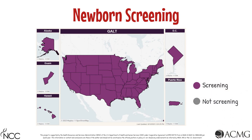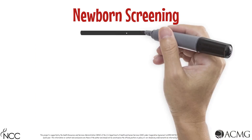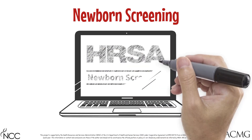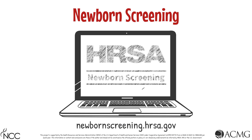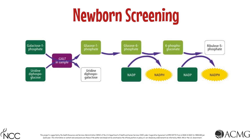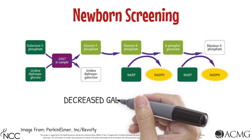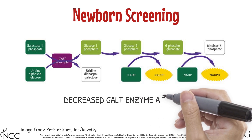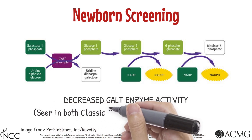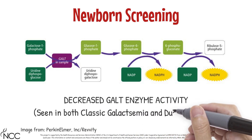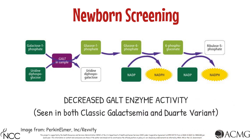All states in the United States provide newborn screening for Classic Galactosemia. A good resource for checking a state's newborn screening panel is the newbornscreening.hrsa.gov website. Screening is performed by examining levels of the galactose-1-phosphate uridyl transferase, or GALT, enzyme, which is decreased in individuals with Classic Galactosemia. Screening may also detect individuals with a benign variant of Classic Galactosemia, known as the Duarte variant.